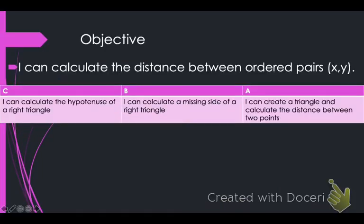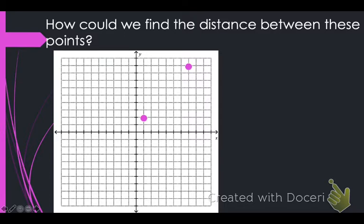Your objective today is I can calculate the distance between ordered pairs on a graph. Ordered pairs are x, y, right? And you're going to be given a graph every time. You're going to have a bunch of steps you need to write down. Remember, you need to show the guest teacher your notes in order to get the worksheet, which is homework due tomorrow.